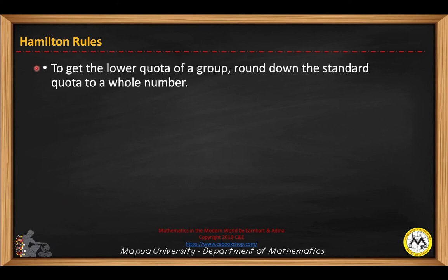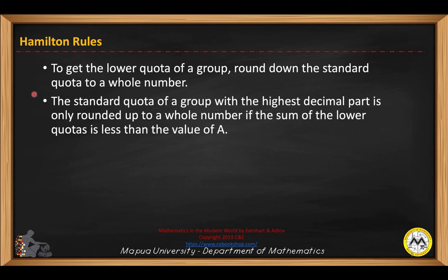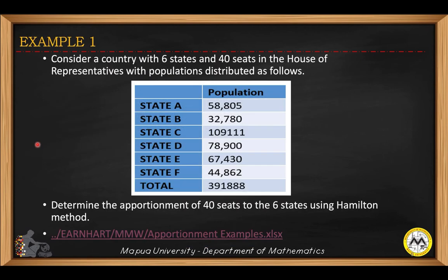To use the Hamilton method, we apply the following rules. To get the lower quota of a group, we round down the standard quota to a whole number. The standard quota of a group with the highest decimal part is only rounded up to a whole number if the sum of the lower quotas is less than the value of A. The process is repeated until the value of A is reached.